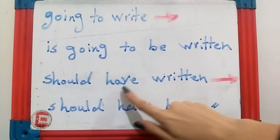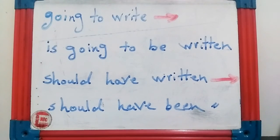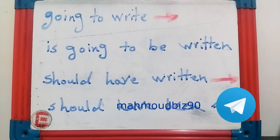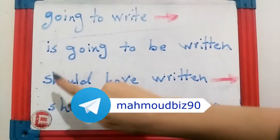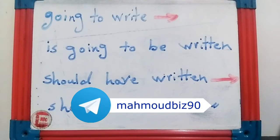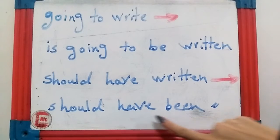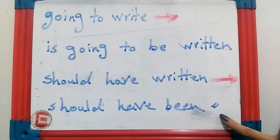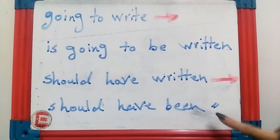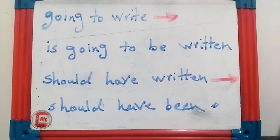The last structure is for perfect modals — for example 'should have written.' These are modal perfects. Should, could, might, and must are modal verbs. To convert to passive: should have been written. The structure is: modal + have been + past participle. That's all about the passive voice — good luck!